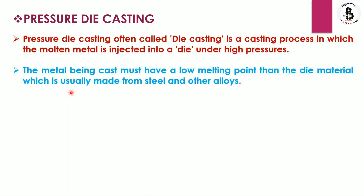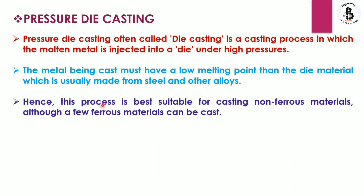The die is usually made from steels or other alloys, and the metal being cast must have a lower melting point than the die material. The process is best suitable for casting non-ferrous materials, although a few ferrous materials can also be cast using the pressure die casting process.